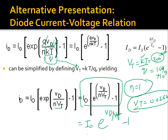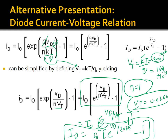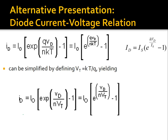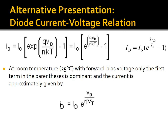At room temperature, the diode current equation simplifies to I_D = I₀ · exp(V_D / 0.026) - 1. So if you are given a diode forward voltage — for example, 0.7 V — you can substitute it directly to calculate the forward bias current. This is just another representation of the diode current-voltage relationship. Either form can be used, and they are interrelated. Expanding, we get I_D = I₀ · exp(V_D / n·V_T) - I₀, where the second term is the reverse bias saturation current.